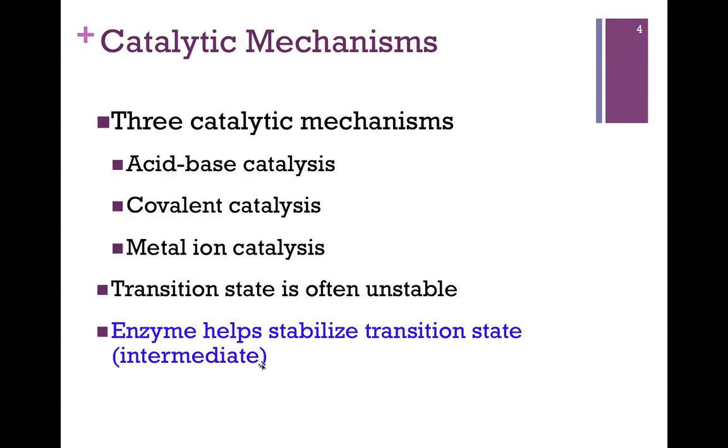We'll look at three catalytic mechanisms: acid-base catalysis, covalent catalysis, and metal ion catalysis. All catalytic mechanisms involve one or more of these three types. Remember, the transition state is often unstable, and so the role of the enzyme is to help stabilize that transition state intermediate.